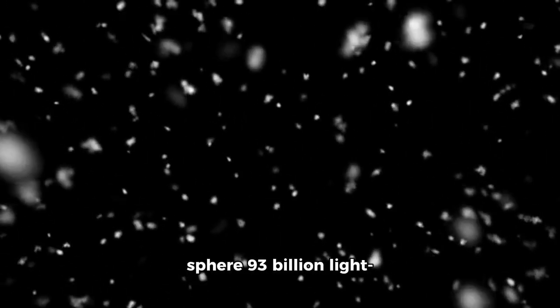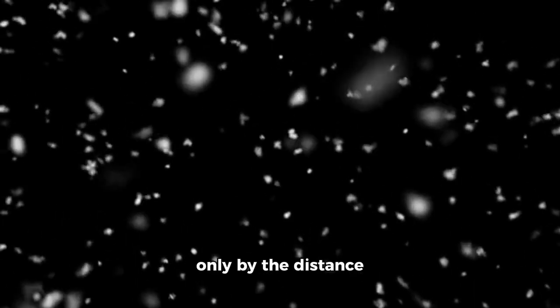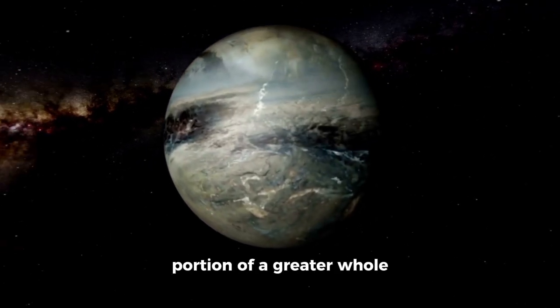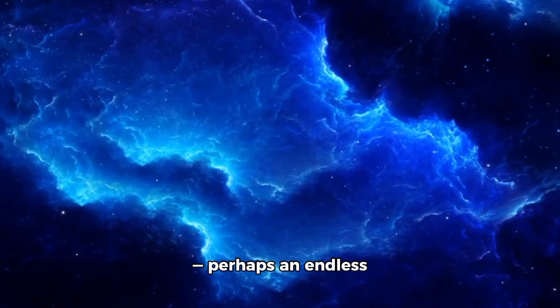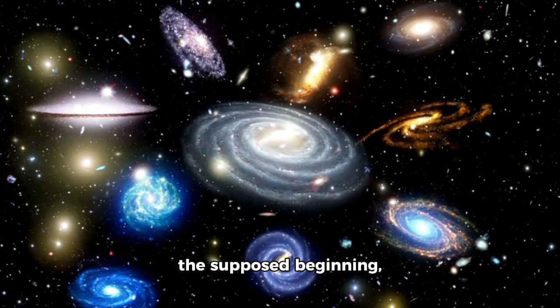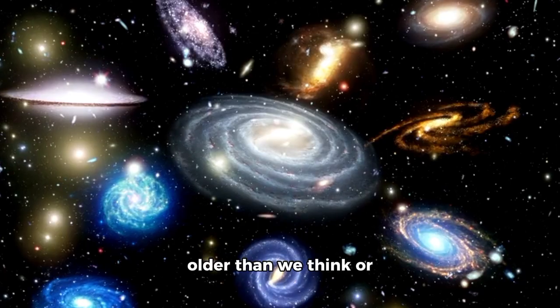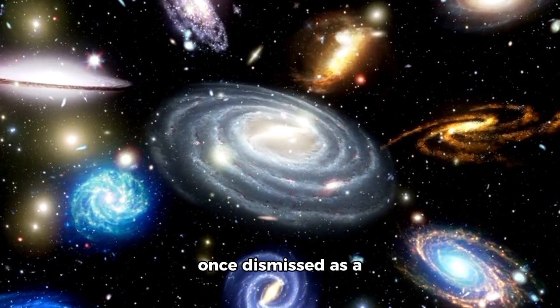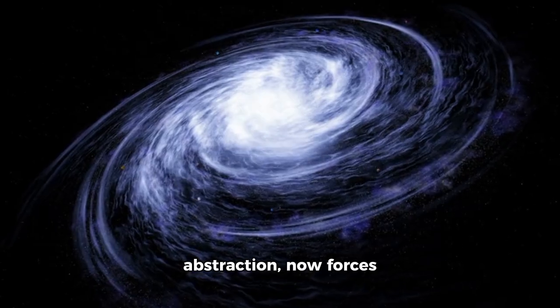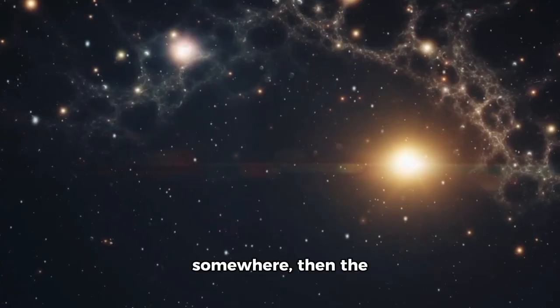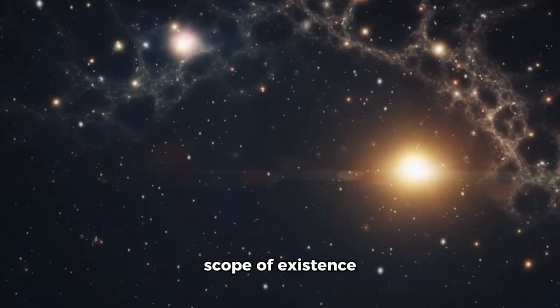A sphere 93 billion light years across, limited only by the distance light has traveled since the beginning. But Webb's revelations suggest that we only see a portion of a greater whole, perhaps an endless expanse with no boundaries. If galaxies were already fully formed soon after the supposed beginning, could the universe be older than we think or even eternal? Infinity, once dismissed as a philosophical abstraction, now forces its way back into science. If every possibility we can imagine must exist somewhere, then the scope of existence becomes staggering.